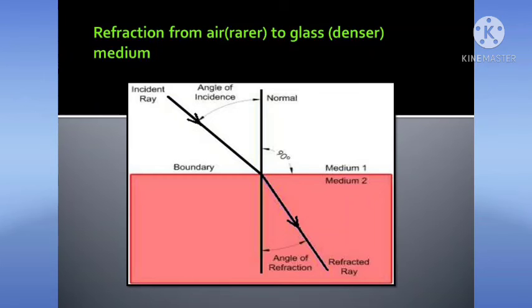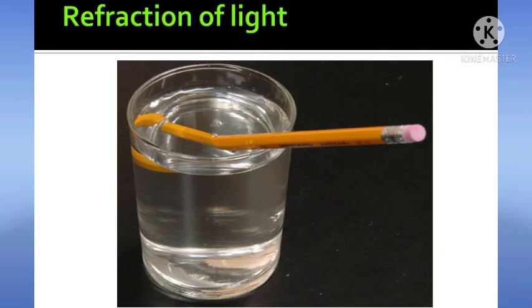Children, if you put a pencil in water, the part of the pencil in water will appear bent to you. Simply, this is because of refraction of light.